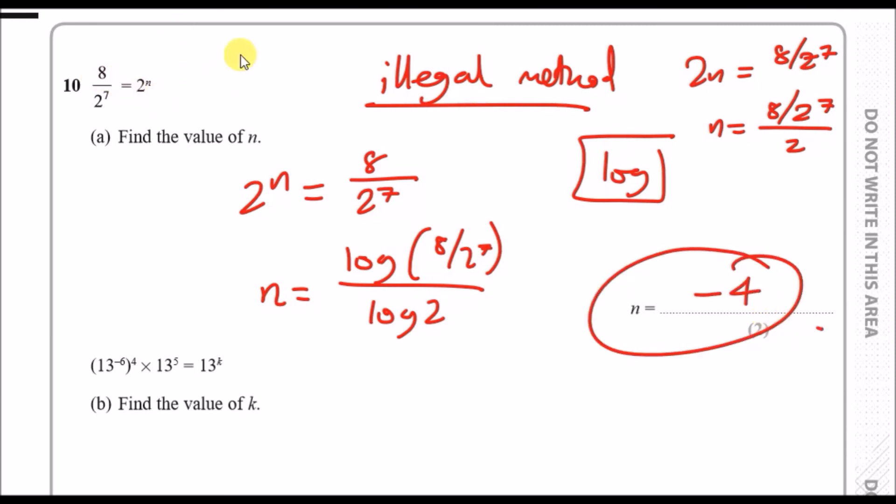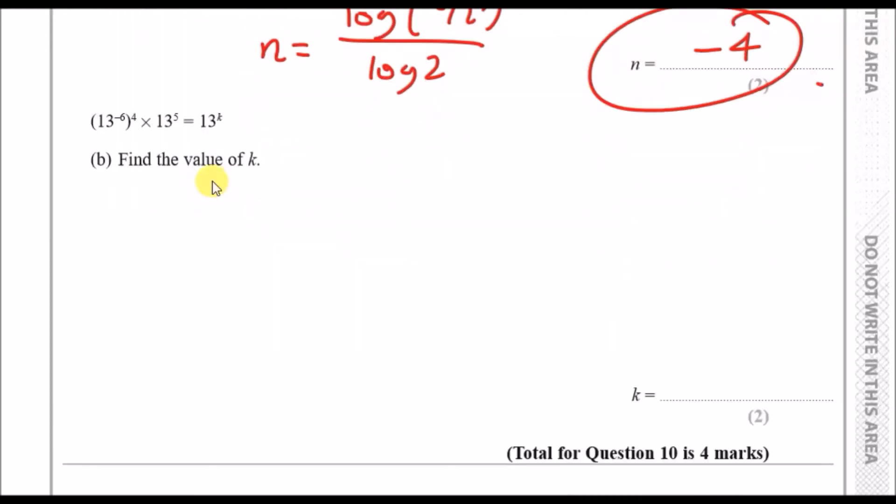There is a standard way, which is changing 8 as 2 to the power 3. 2 to the power 3 over 2 to power 7, subtract the powers, you get 2 to the negative 4. That also works. This is just a guaranteed no-mistake way using divide and smash logs in front. Let's try that method again for the second bit. You've got 13 to power k equals all of those guys.